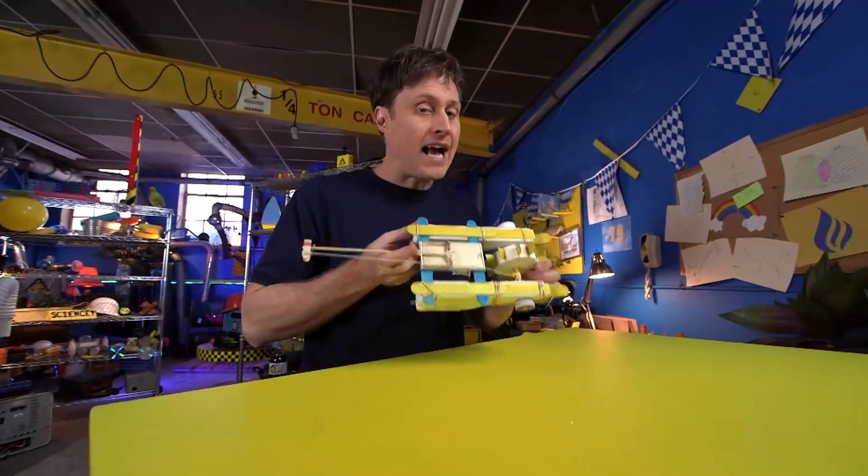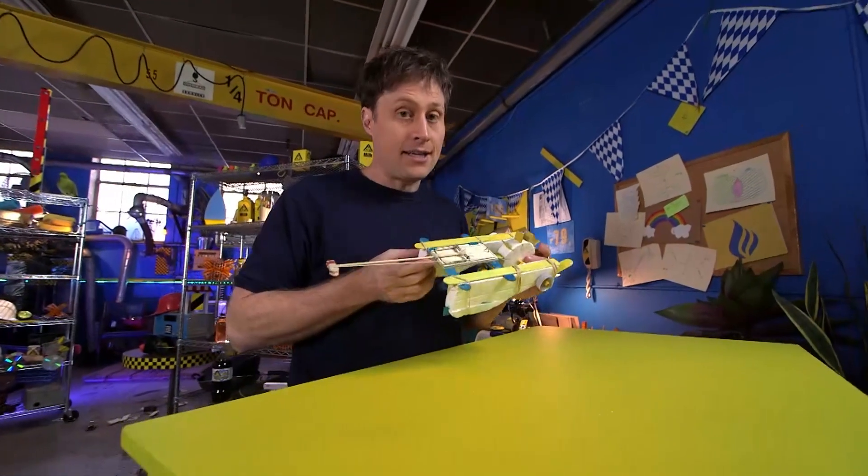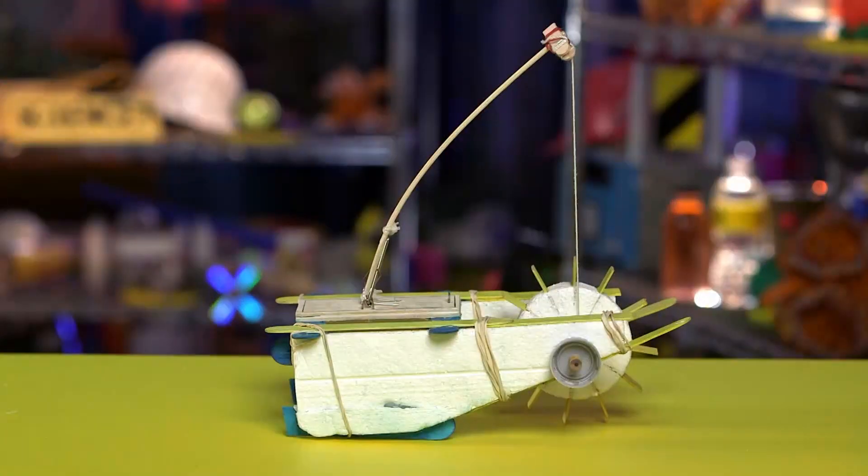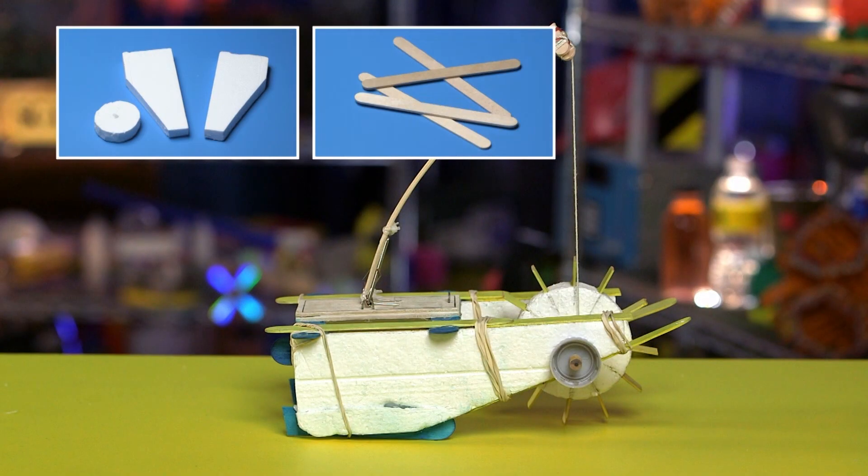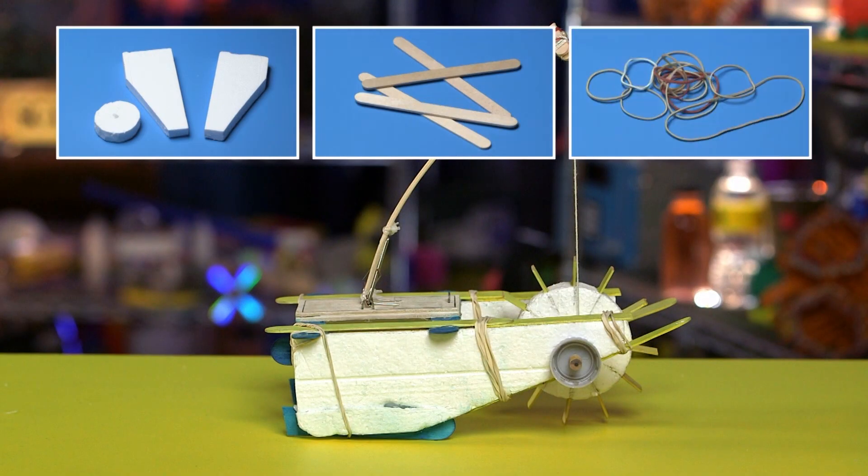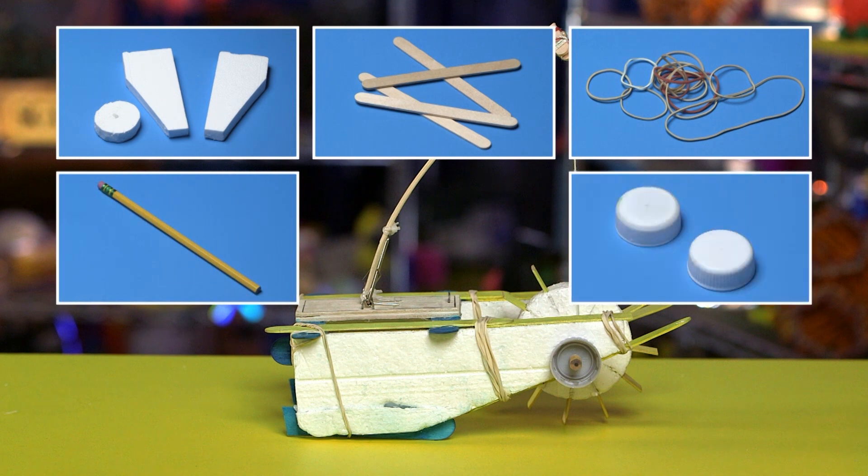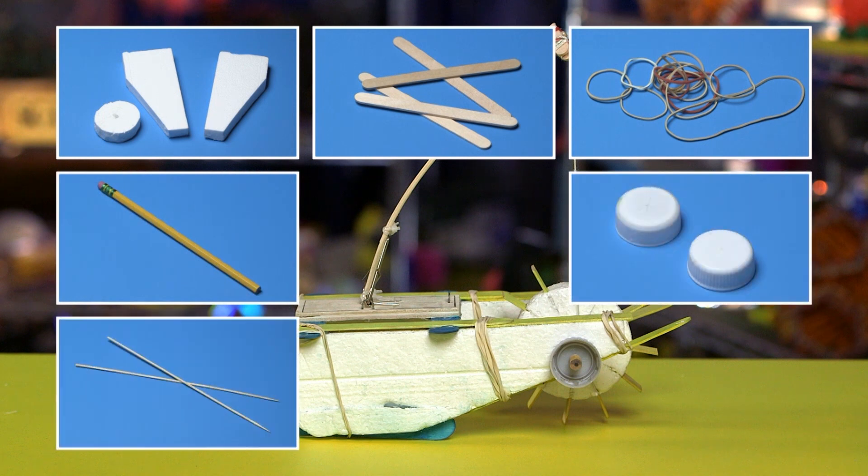Now looks kind of complicated but it's actually quite simple to make and here's what you need. My mousetrap boat is made with styrofoam craft sticks and elastics. You'll also want a pencil plastic drink caps a shish kebab skewer small zip ties string and of course your mousetrap.